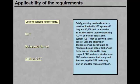In the case of CBT, the ship owner declares certain cargo tanks as dedicated clean ballast tanks, and these are not allowed to carry cargo. A CBT system is similar to an SBT system, except that the pumps and lines serving the CBT tanks may also be used for cargo operations.